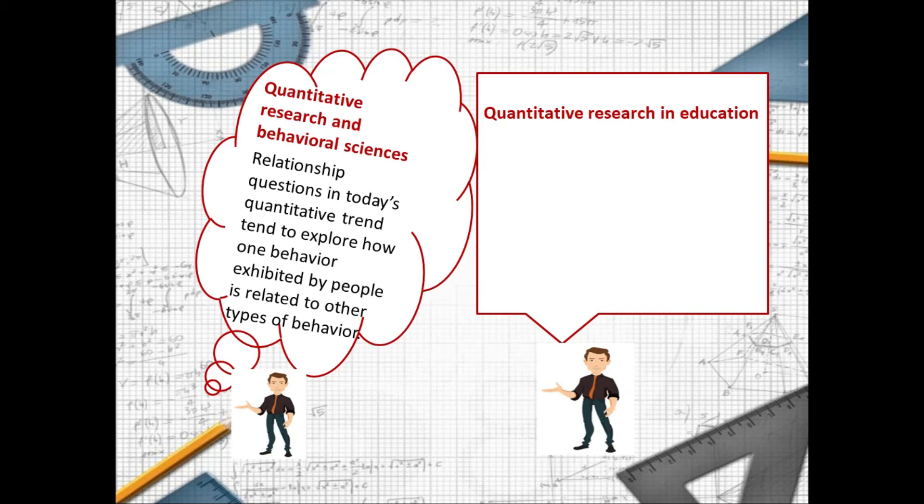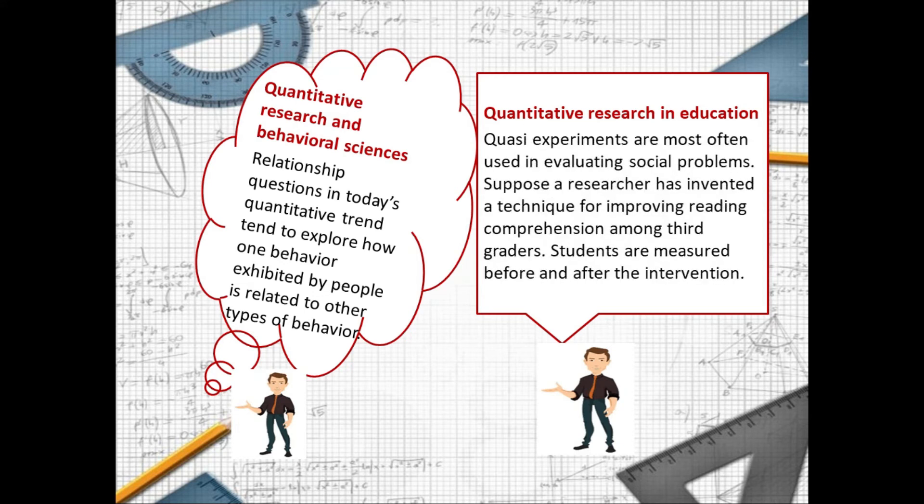Quantitative research in education. Quasi experiments are most often used in evaluating social problems. Suppose a researcher has invented a technique for improving reading comprehension among third graders.